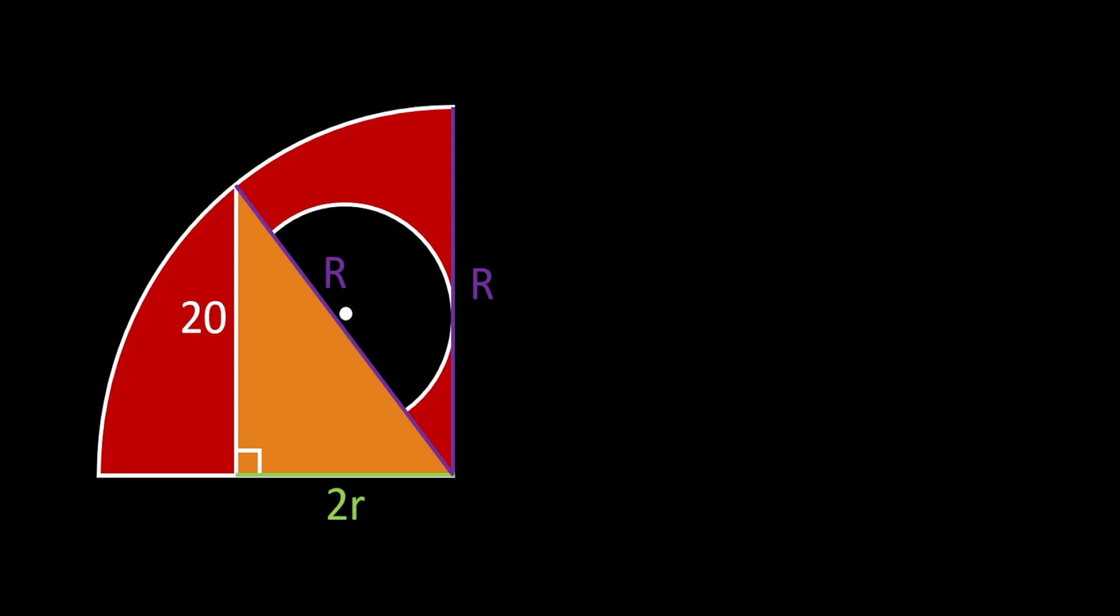We can rotate it so it intersects the point where our tangent line meets the quarter circle circumference. In this way you can notice that we got this orange right triangle with the hypotenuse of big R and the legs of two small r and 20.